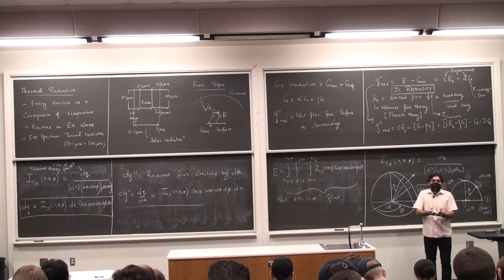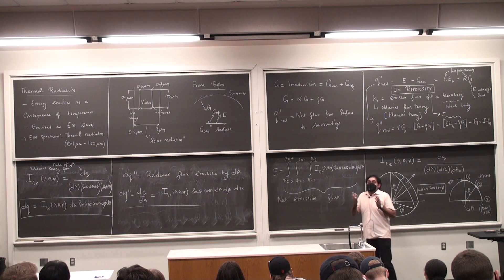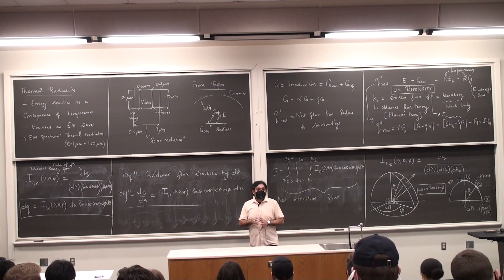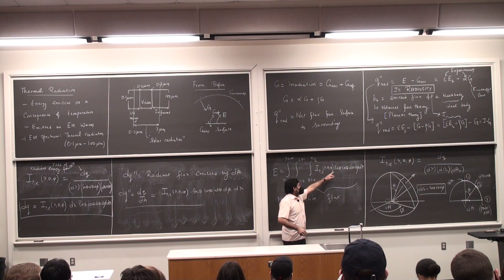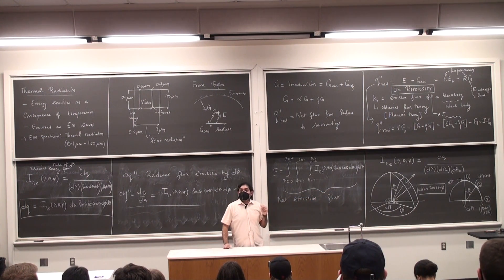I'm going to say that, okay, what if my emitting area is a diffuse emitter? A diffuse emitter is an emitter which emits the same in all directions, which means there is no directional dependency, which means that I can take this guy, i lambda, out of the integrals containing d theta and d phi. It's going to be independent of directions.